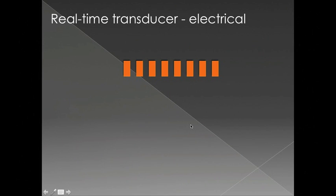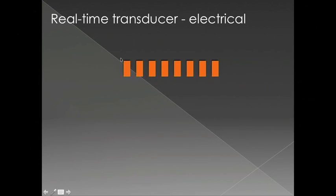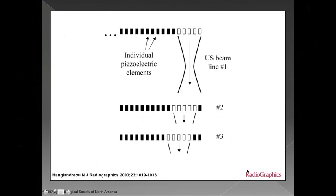Our modern transducers have a series of crystals with beam lines that are electronically steered due to interference patterns in the sound waves created by each of the crystal elements. This is known as a sector or vector type transducer, and I'd like to contrast that briefly with the linear form of transducer.